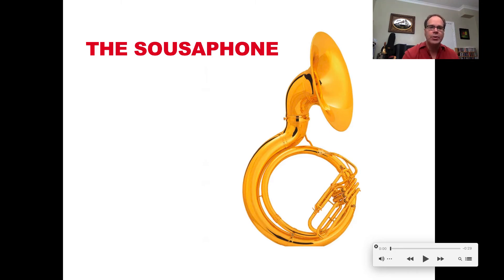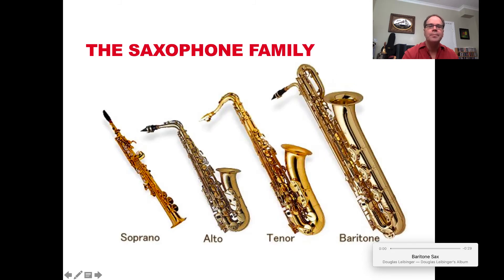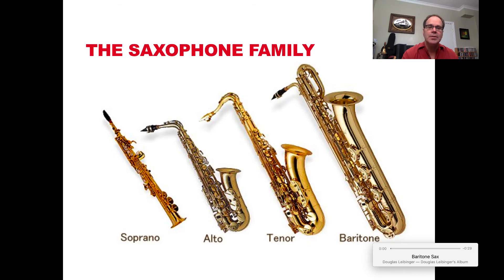So the two brass instruments you have to know are trumpet and trombone. The next one we're going to look at is from the woodwind family — we're going to start with the saxophones. Woodwinds are called woodwinds because they have a piece of cane or wood that gets strapped to the mouthpiece with a thing called a ligature, and the sound of that instrument is created by making that cane vibrate. You blow into the mouthpiece, the cane vibrates, and then the rest of the instrument amplifies the sound.